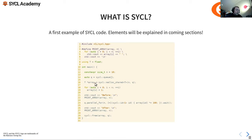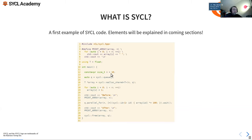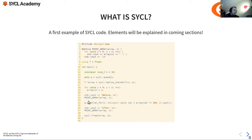Essentially we're constructing a queue, which is associated to some device — it's a unit of work, like a list of things to be done. We malloc some memory, initialize it, and then do some kernel code. This is essentially a SYCL code. You'll notice we have a parallel_for, which is kernel code, within a normal C++ file. This is a core aspect of SYCL.